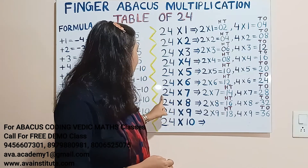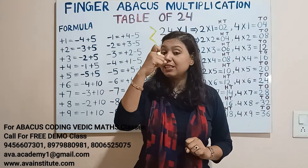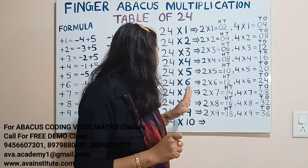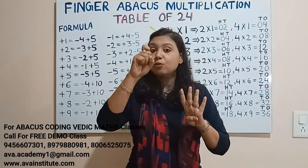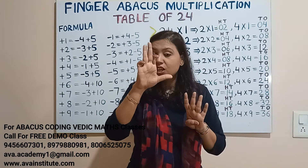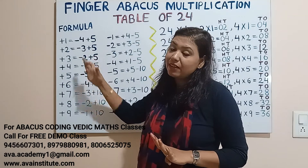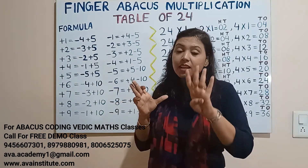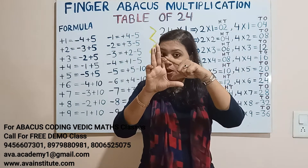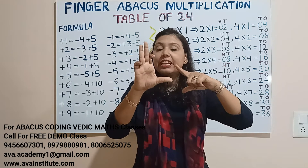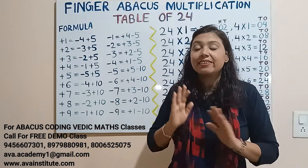Next, 24 sevens are: 2 sevens are 14 — in hundreds 1, in tens 4. In hundreds we represent 1, in tens we represent 4. Now 4 sevens are 28 — in tens we represent 20, in ones we represent 8. To add 20 here, the plus 2 formula is minus 3 plus 5, so the formula for plus 20 is minus 30 plus 50. So the answer: in hundreds it is 1, in tens it is 6, in ones it is 8 — so the answer is 168.